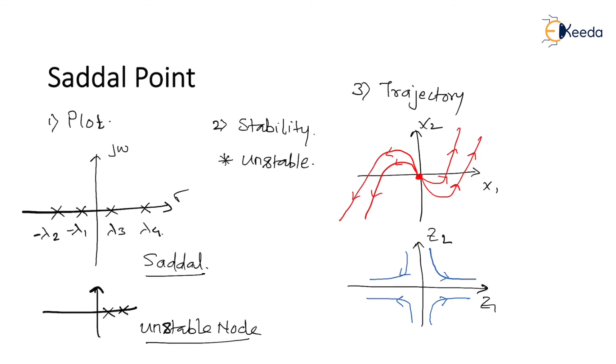The trajectory of the saddle point will be leaving the origin towards the two-dimensional space. That means this trajectory will be merging away from the origin.